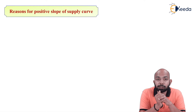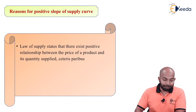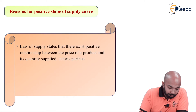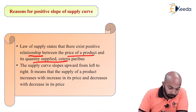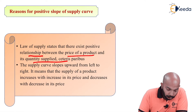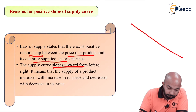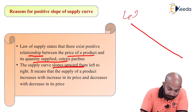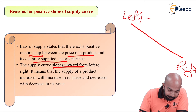Let's understand a few reasons related to it. The first reason: the law of supply states that there exists a positive relationship between the price of a product and its quantity supplied. The supply curve slopes upward from left to right — meaning it slopes like this — this is the left side and this will be the right side.